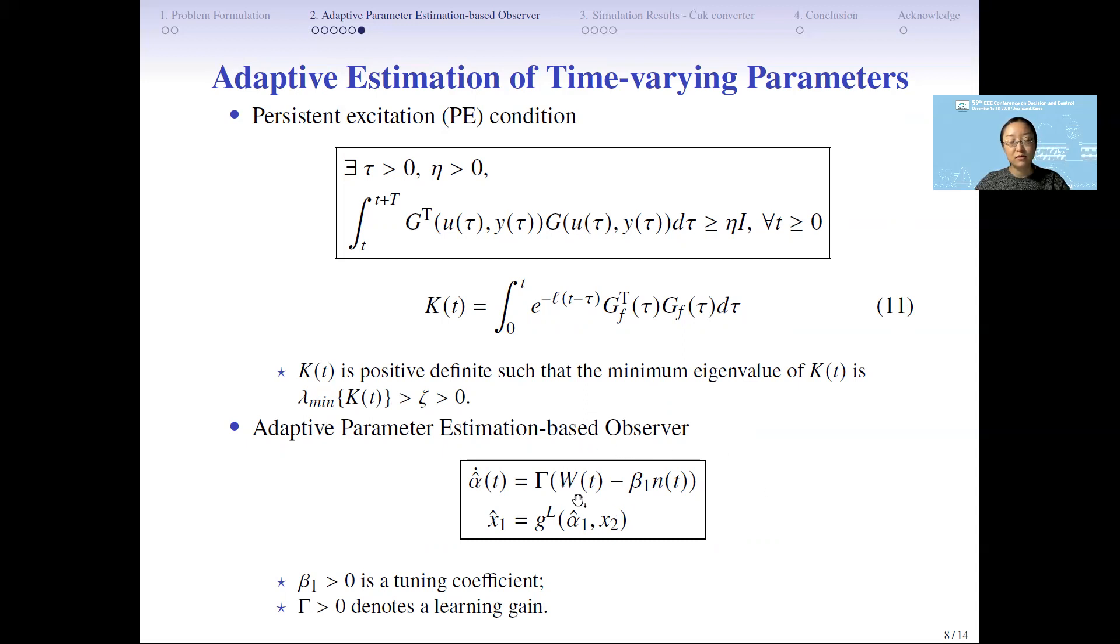After that, we use the metric w and n to design the adaptive parameter estimation-based observer. You could see the beta 1 is a tuning coefficient, which has the function to define the trade-off between the estimation, faster convergence, and the robustness.